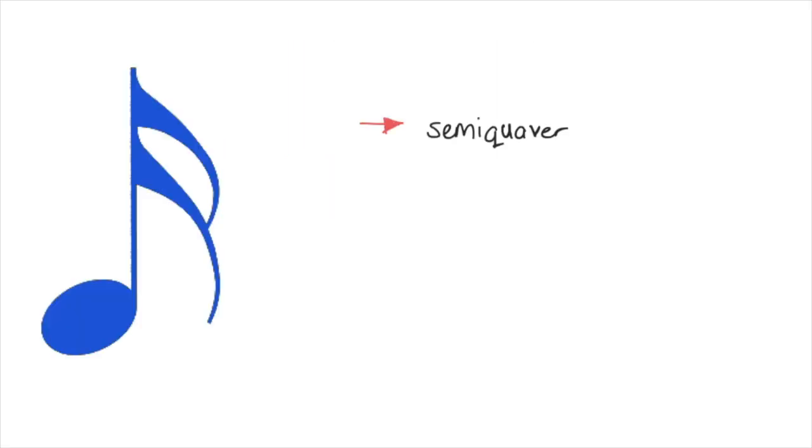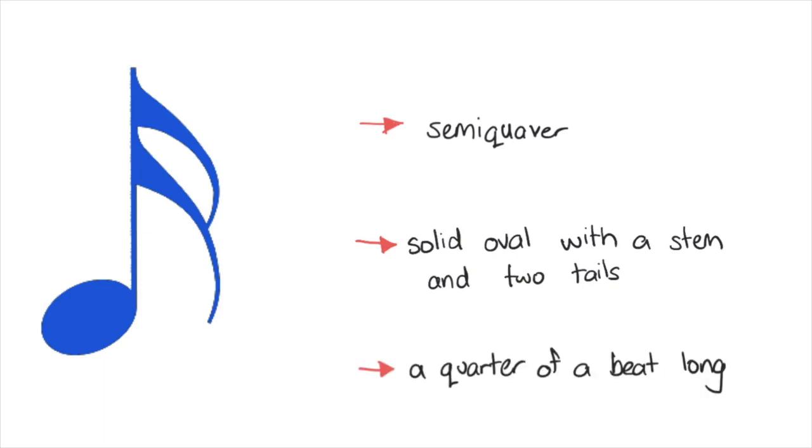This is called a semiquaver. It looks like a solid oval with a stem and two tails, and it lasts for just a quarter of a beat.